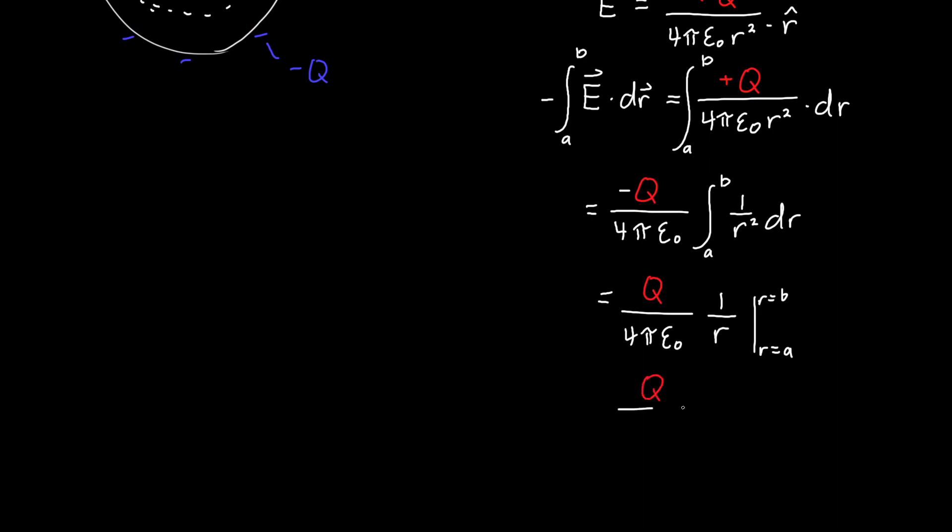If we plug in R equals B and R equals A, we'll get Q over 4π epsilon naught times 1 over B minus 1 over A. We're almost done. This is delta V. This is what we're looking for all along. This is what we need to find the capacitance.